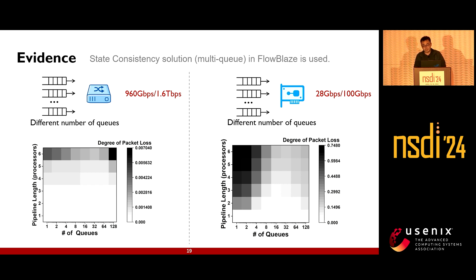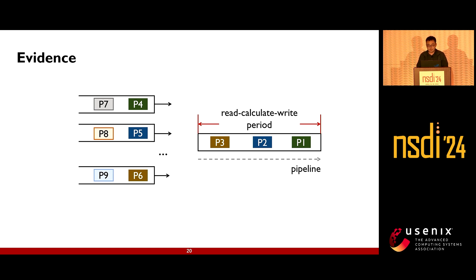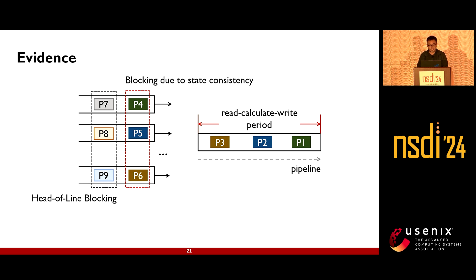The simulation results show that when supporting complex stateful network functions — when the required pipeline length is relatively long — there is varying degrees of packet loss in both switch and NIC scenarios. When packets P1, P2, and P3 of three different flows are being processed in the stateful pipeline stages, packets within the same flow must wait (P4 to P6 blocked due to state consistency), and victim packets P7 to P9 cannot be processed due to head-of-line blocking, seriously affecting throughput and increasing processing delays.